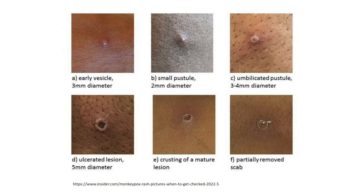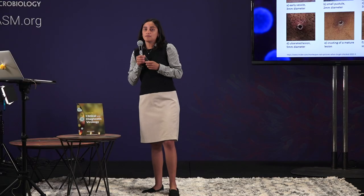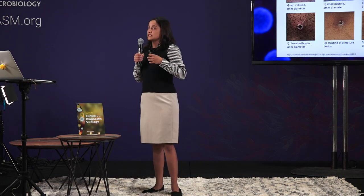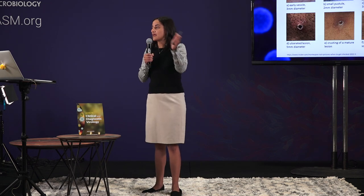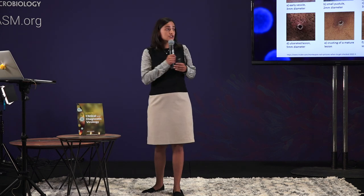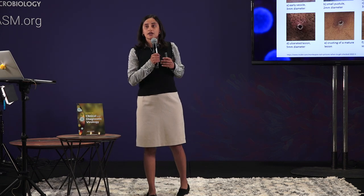One symptom that the two viruses do share is that characteristic rash. This rash appears like raised bumps over the skin. These bumps fill with fluid and pus over the course of four to five days and become pustules. These pustules are characteristically umbilicated, meaning they have a little divot in the center. And then over the course of two to three weeks, these pustules will ulcerate, scab, and then fall off. The lesions are actually the best way to test for the virus. You can collect lesion fluid or tissue with a swab or directly into viral transport media.